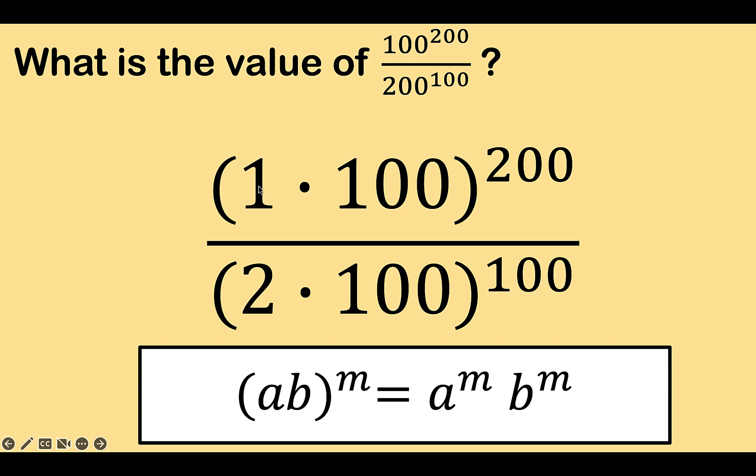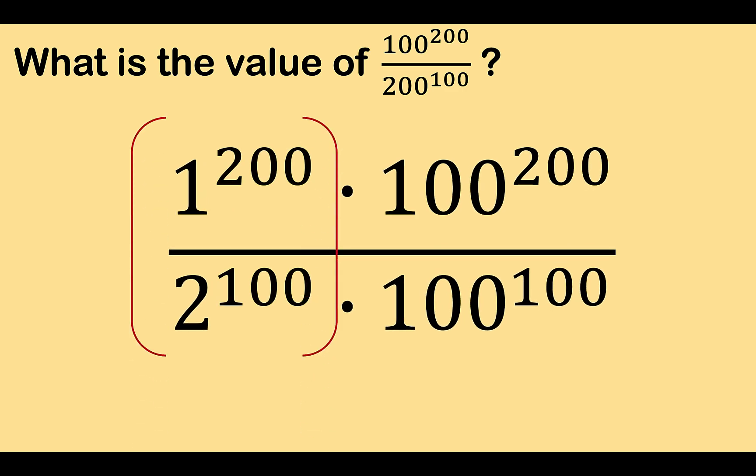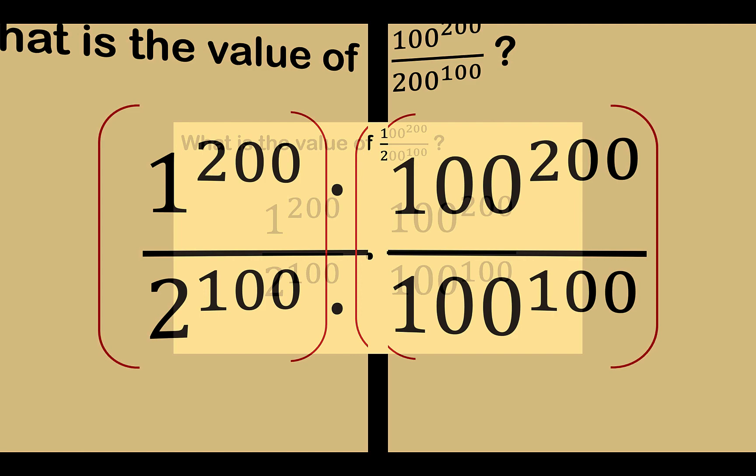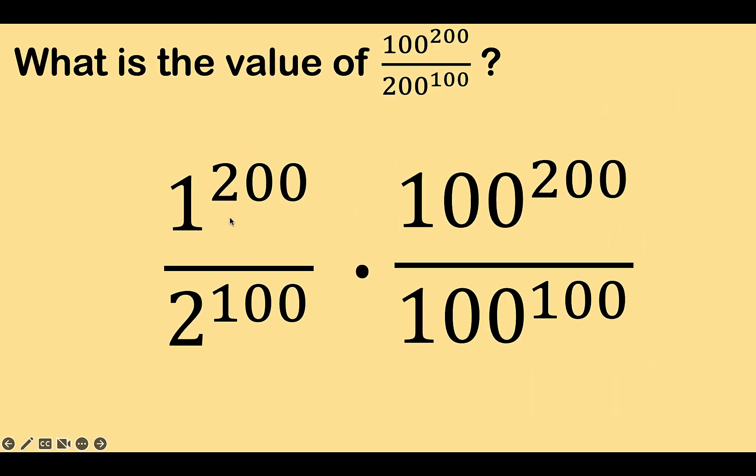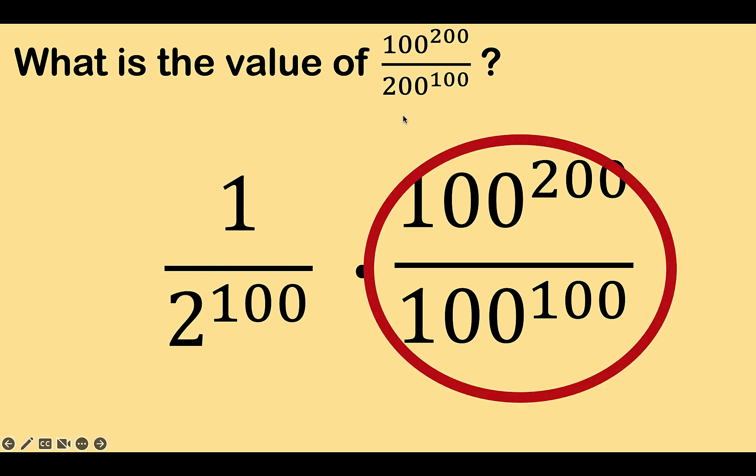So in here we can therefore write this as 1 raised to 200 times 100 raised to 200, and do the same thing for the denominator. So here is the result. Then we can group this together like this, and we can now split this into two fractions. Now look at this: 1 raised to 200, that is equal to 1.